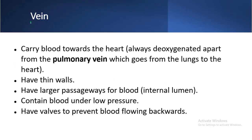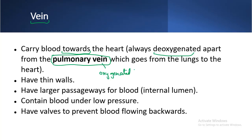Another blood vessel is the vein, which carries blood towards the heart. Veins always carry deoxygenated blood, other than the pulmonary vein. The pulmonary vein works like an artery as it carries oxygenated blood. All other veins carry deoxygenated blood — blood that does not have oxygen in it.